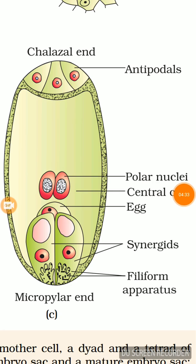In a bisexual flower, does only cross-pollination take place? No, that's wrong. In a bisexual flower, self-pollination can also take place.